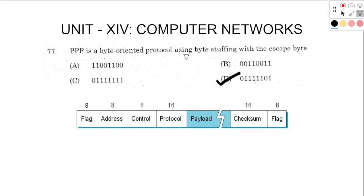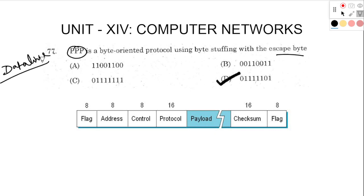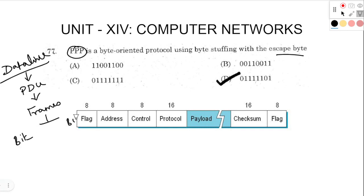Next: PPP is a byte-oriented protocol using byte-stuffing with escape byte. PPP is a data-link layer protocol. We know that the OSI model has seven layers, and PPP is used in the data-link layer. In the data-link layer, we use the PDU — protocol data unit. We access frames, and in frames we can access two protocols: bit-oriented protocol and byte-oriented protocol.